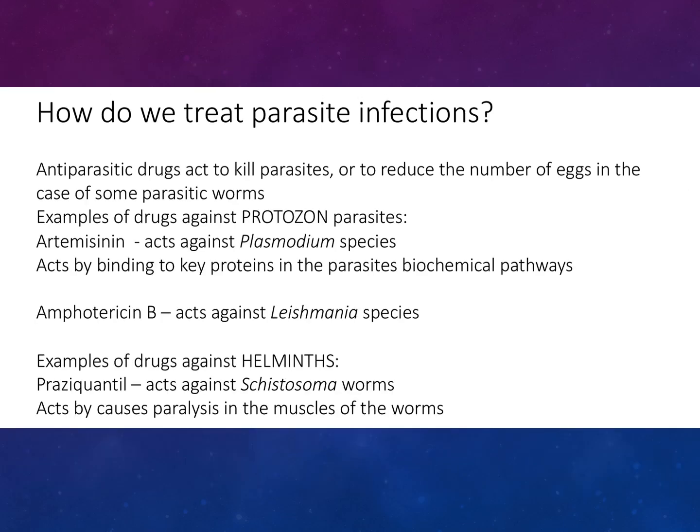Examples of drugs against protozoan parasites include artemisinin, which acts against Plasmodium species and acts by binding to create proteins in the parasite's biochemical pathways, and Amphotericin B, which acts against Leishmania species. Examples of drugs against helminths include praziquantel, which acts against schistosoma worms and acts by causing paralysis in the muscles of the worms. That's a quick video for you on treatment of microorganisms. The next one will be on antibiotic resistance and the cell envelope. See you next time.